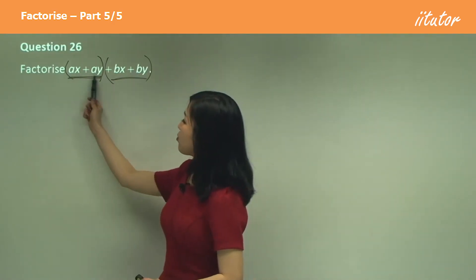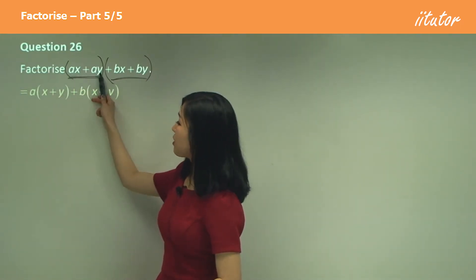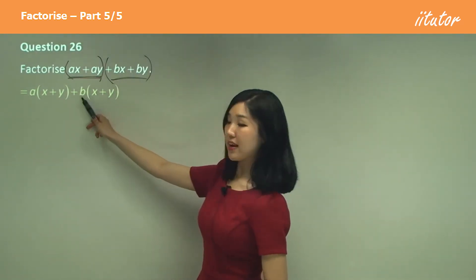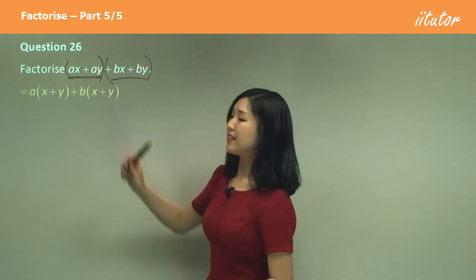So I'm going to take a out and we'll have x plus y left over. Plus, see here, b is a common factor. So I took b out and we have x plus y left over.